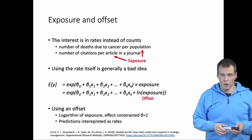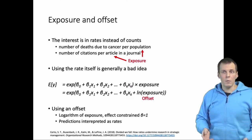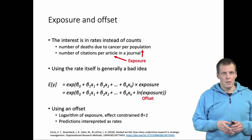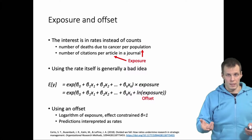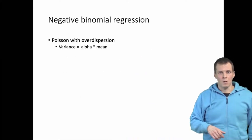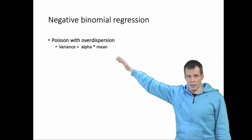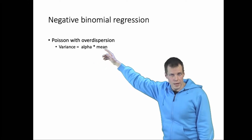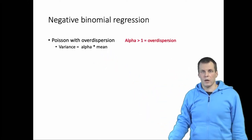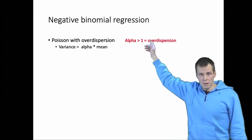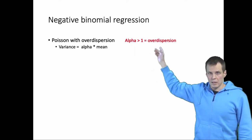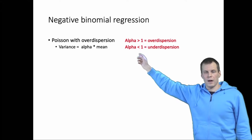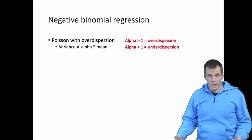Another variant is the negative binomial regression model. The Poisson distribution assumes the variance equals the mean for a given observation. We can relax that by saying variance equals alpha times the mean. If alpha is greater than one, the data are over-dispersed and negative binomial regression may be used. If alpha is less than one, the data are under-dispersed.